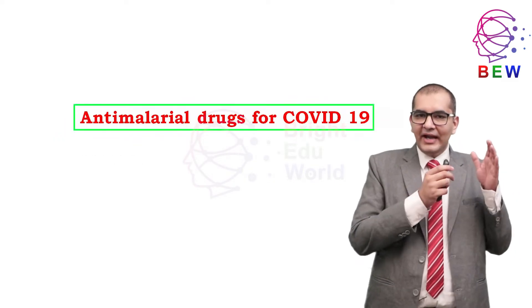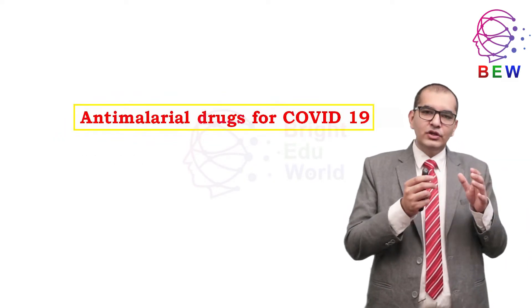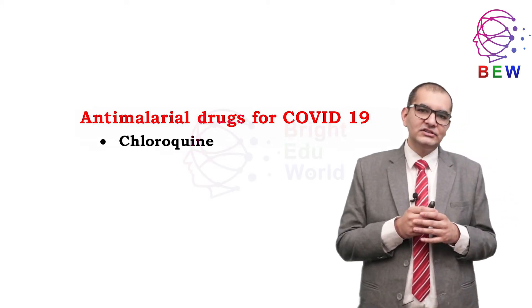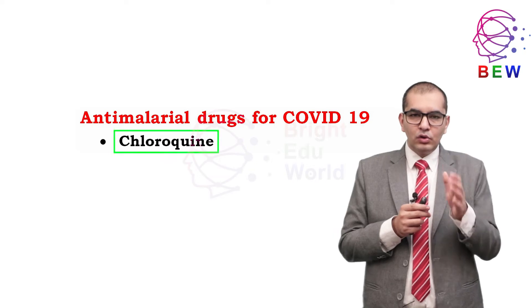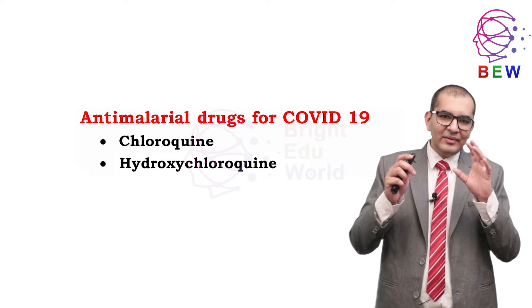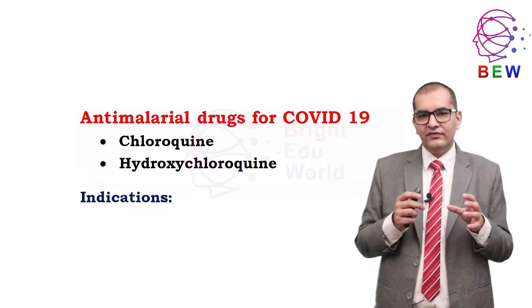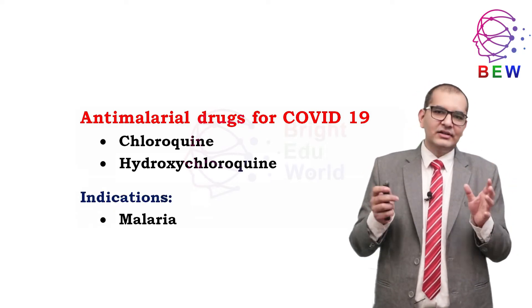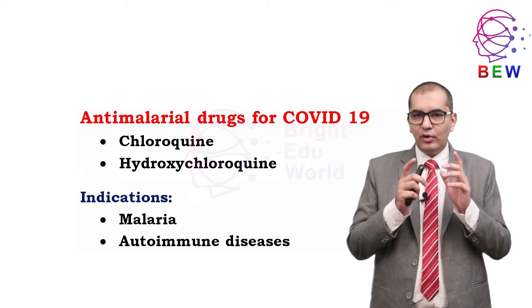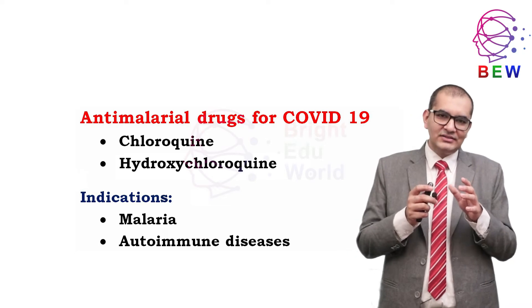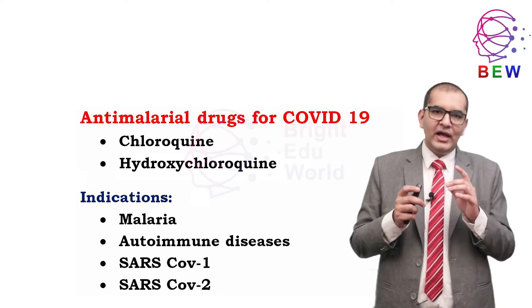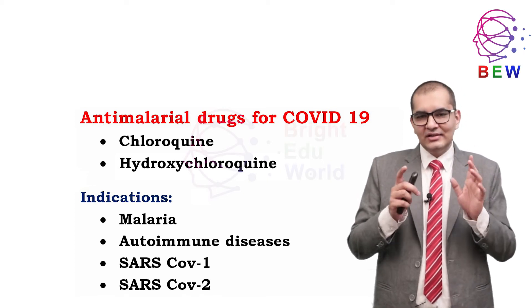Next, we discuss anti-malarial drugs used for COVID-19 treatment. The first is chloroquine. Chloroquine and its derivative hydroxychloroquine have traditionally been used for malaria and certain autoimmune diseases. However, these drugs have shown possible activity against SARS-CoV-1 and SARS-CoV-2 in vitro and in clinical practice respectively.